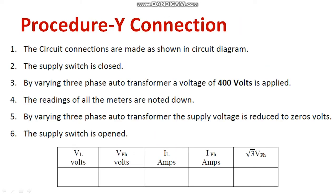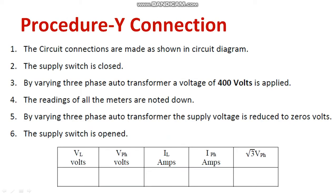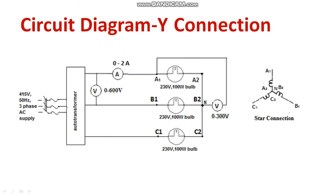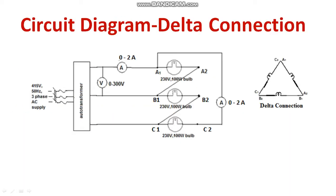The procedure is very simple. Connections are made as per the circuit diagram and the supply switch is closed. Afterwards, by varying the auto transformer, you have to apply 400 volt line voltage. At that time you measure what is the value of phase voltage and line current. Afterwards bring the auto transformer back to initial position and open the supply switch. Note down the value of line voltage — this must be 400 volt — and the phase voltage, line current, and phase current. Finally, multiply root 3 into V phase, and you can understand that line voltage must be equal to root 3 into V phase. That is about star connection.